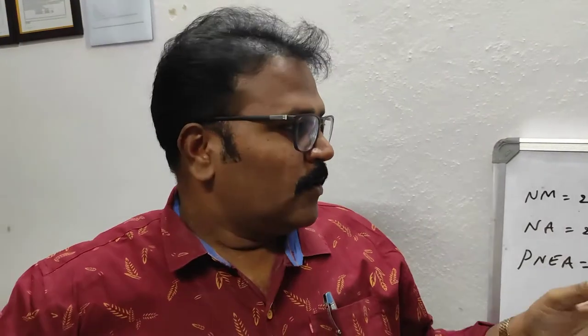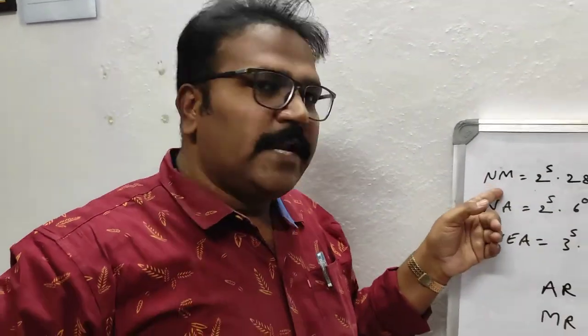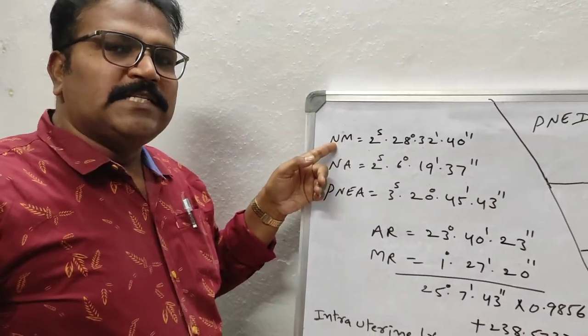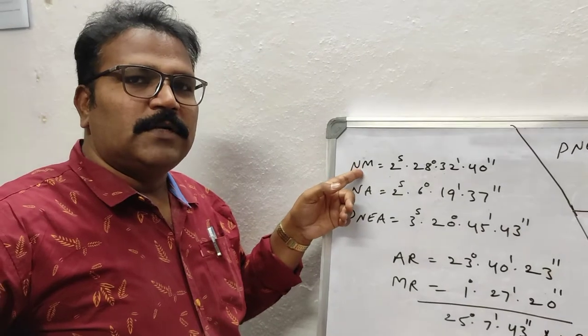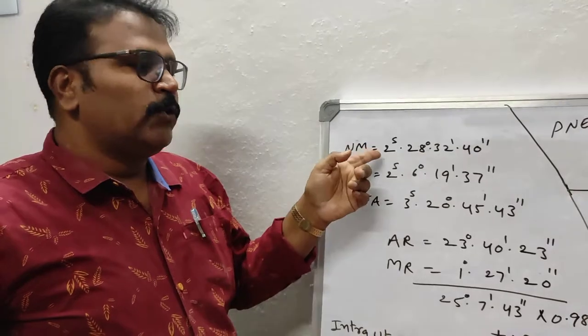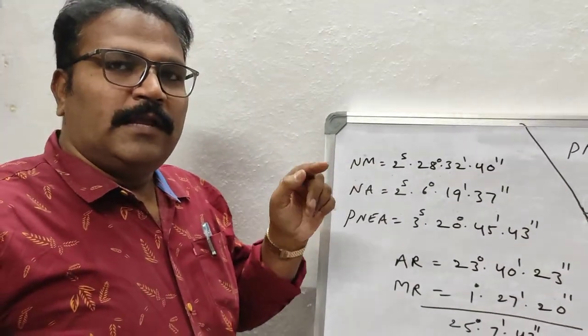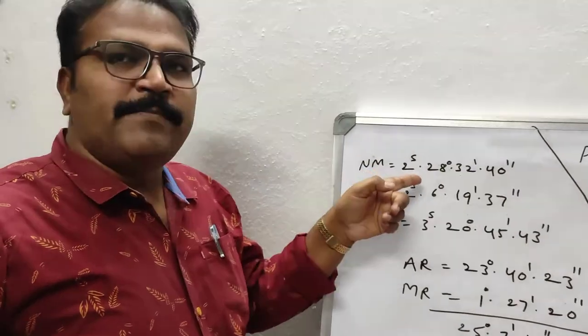After preparing a table, we have cast a chart according to data given by Natu. I have already rectified the chart. On that chart, NM means Natal Moon — 2S, 28 degrees, 32 minutes, 40 seconds. 2S means Gemini. So in that natal chart, Moon is in Gemini sign.